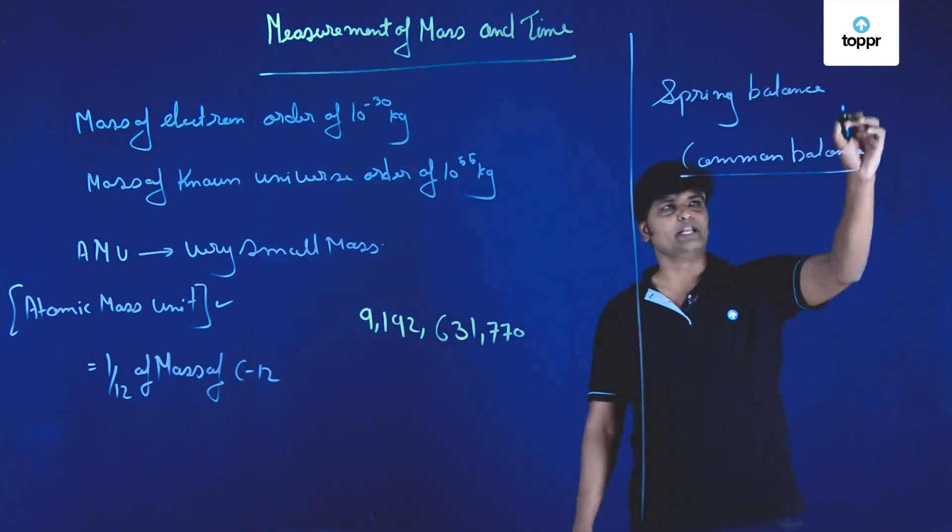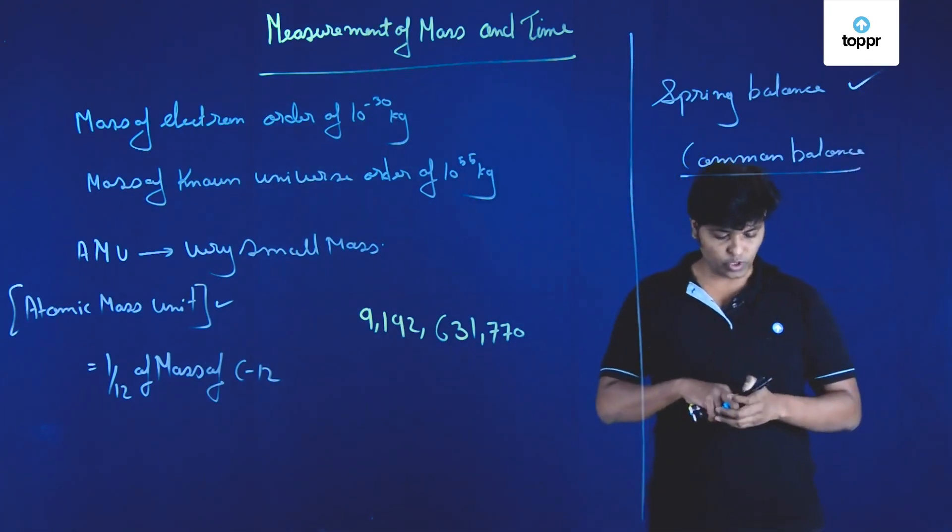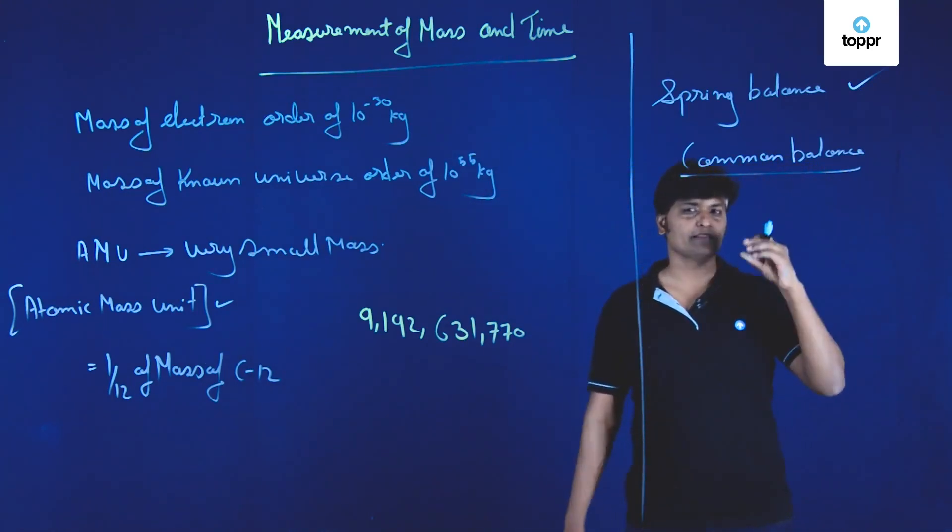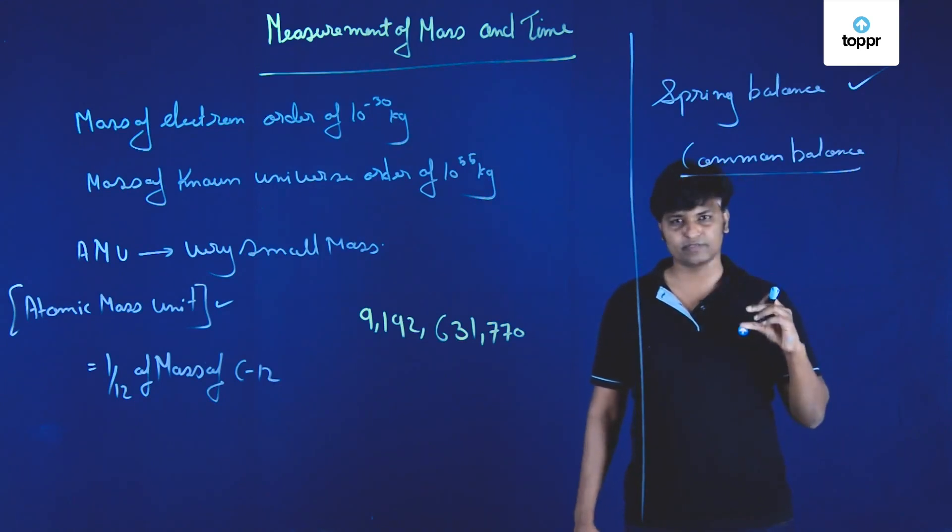Whereas in spring balance, you hang the mass along the spring and the spring displaces, and on the basis of that you can calculate the mass.